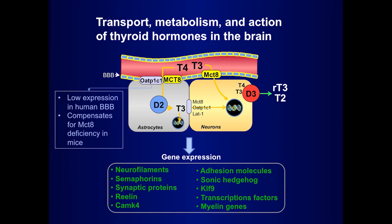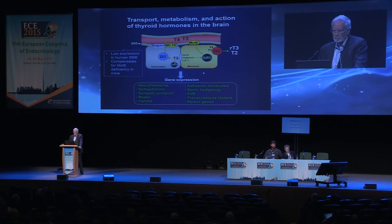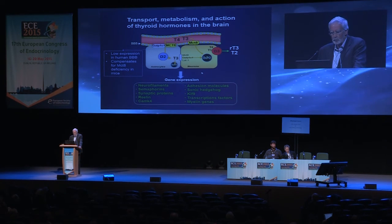Finally, we also discuss gene expression. After T4 and T3 are in the astrocyte neurons — I didn't represent here other important cells, for example, tanycytes for T3 formation, or myelin-producing oligodendrocytes that are in some respects similar to neurons — we know that many genes are under thyroid hormone control.